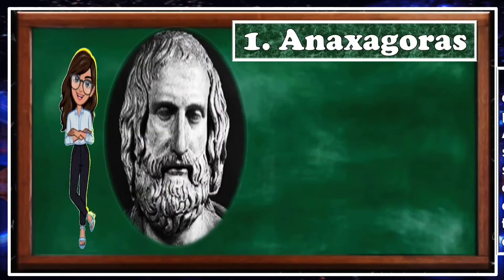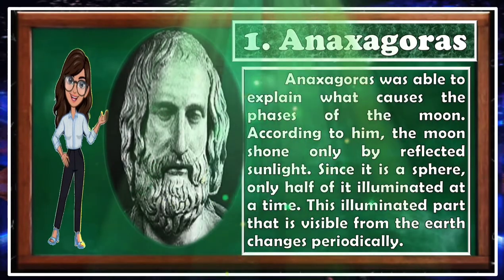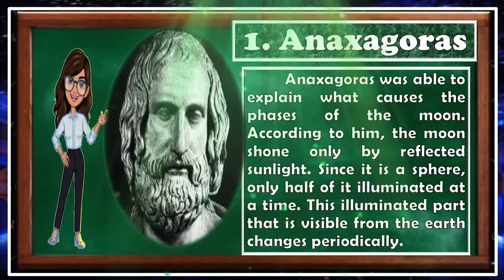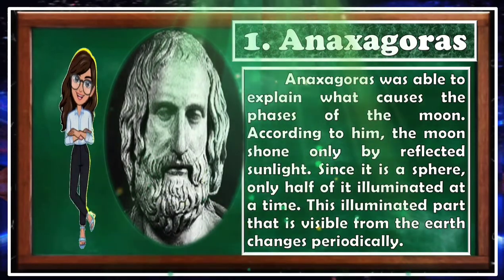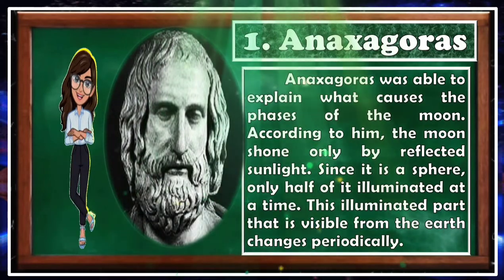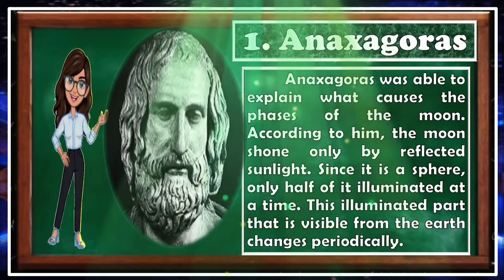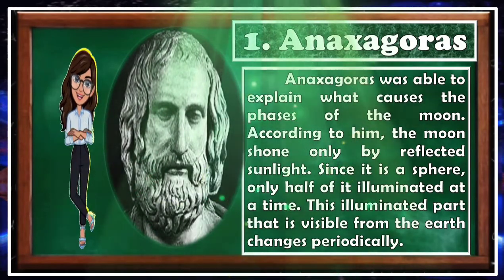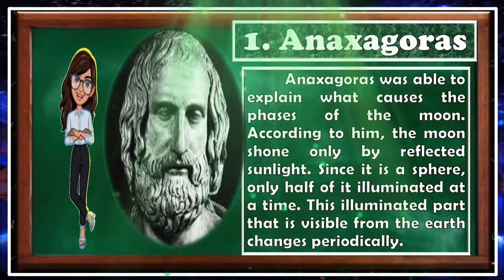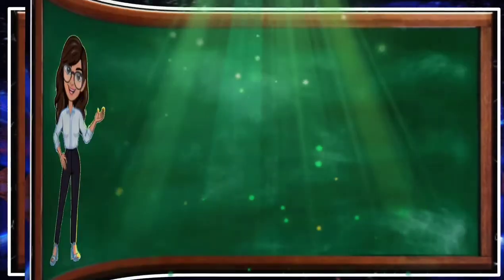Our first Greek astronomer is Anaxagoras. He was able to explain what causes the phases of the moon. According to him, the moon shone only via reflected sunlight. Since it is a sphere, only half of it is illuminated at a time, and this illuminated part visible from the Earth changes periodically.